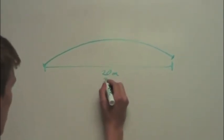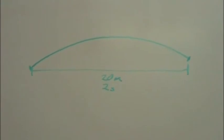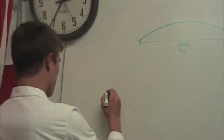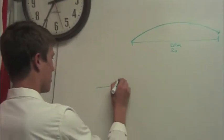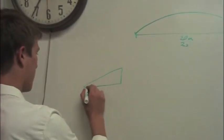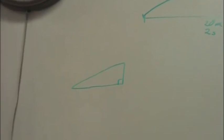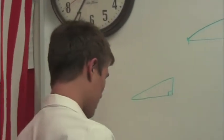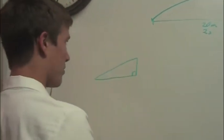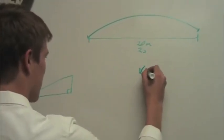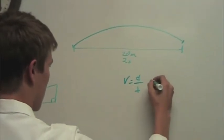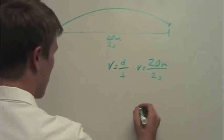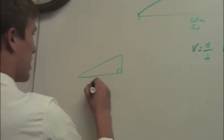The throw took approximately 2 seconds. When you model projectile motion, it's most helpful to use a triangle to break it down into its vertical and horizontal components. We already have all that we need to find the horizontal component. We just need to find the speed the ball traveled: velocity equals distance over time. The velocity would be 20 meters over 2 seconds, so the ball traveled at 10 meters per second.